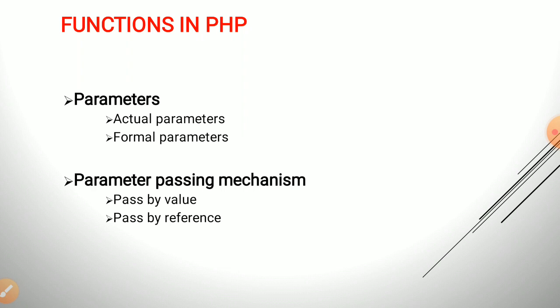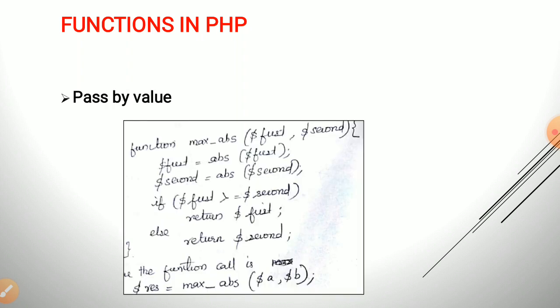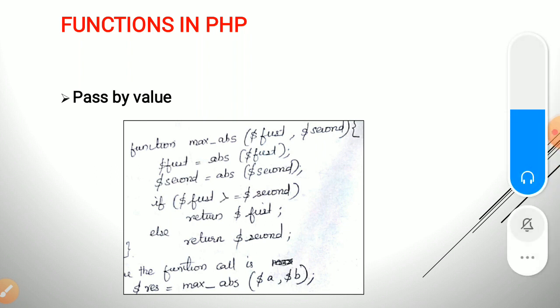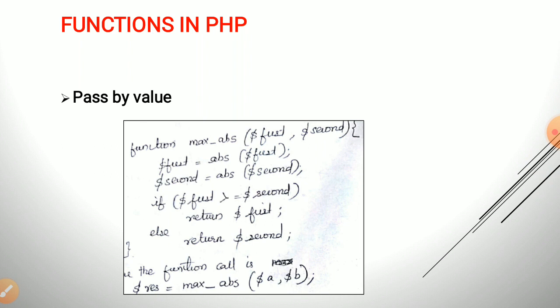Moving to parameter passing mechanisms in PHP: most programming languages use two mechanisms to pass parameters to a function — pass by value and pass by reference. PHP also provides both mechanisms. In pass by value, only a copy of the actual parameters is passed to the formal parameters. Changes to the formal parameters do not reflect back in the actual parameters — it is a one-way communication.